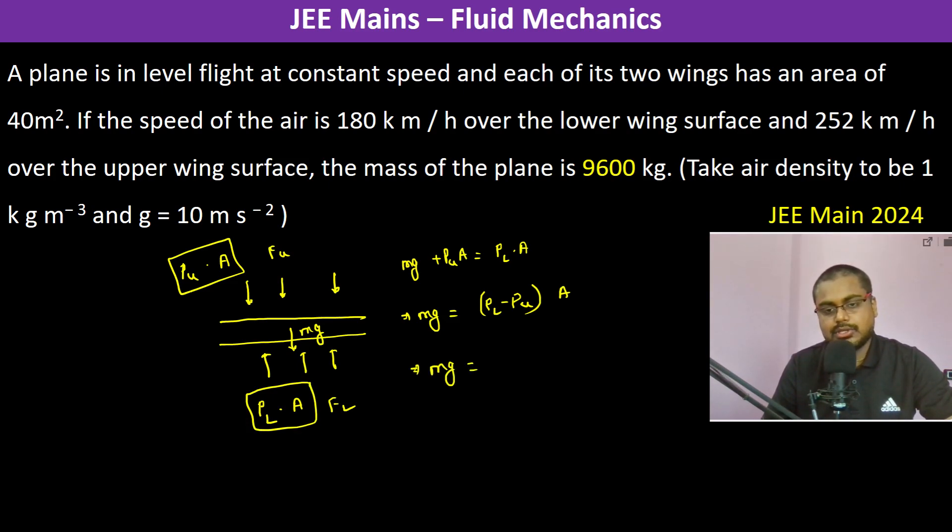Therefore, we can see that M G becomes that 1200 newton per meter square into 40 meter square. So this becomes 48000 newton. Now this is for one wing. So for both the wings, it is going to be 96000 newton. This is the weight. So therefore, mass is divided by 10, that is acceleration due to gravity. So this becomes 9600 kg. Thank you.